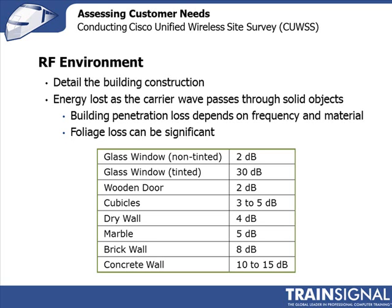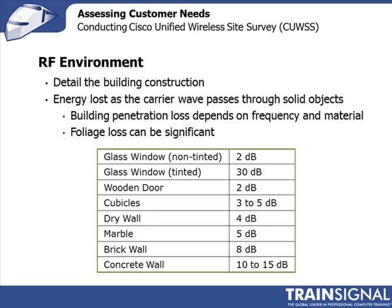What you can do is literally estimate how many dBs you would lose in penetration and put that into your plan. When you go out with your site plan, you're going to write down all the building construction, partitions for the walls, the glass, and then you need to describe the building content. The more detail you can be, the more accurate your site survey is going to be. Classify the type of coverage — whether it's a warehouse, an office, or a combination of the two.